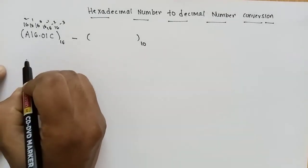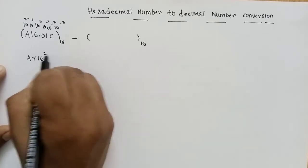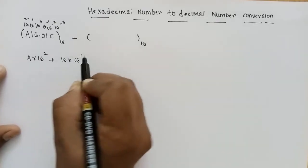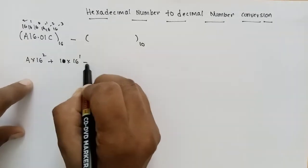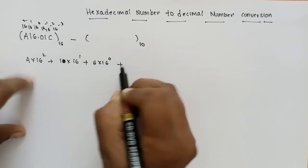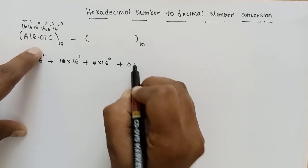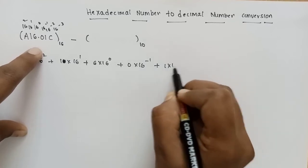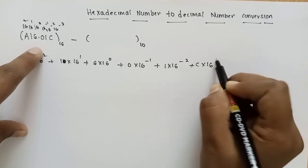We have to multiply these powers. For example: A into 16 squared, plus 1 into 16 power 1, plus 16 into 16 power 0. This is the fractional part of the value: 0 into 16 power minus 1, plus 1 into 16 power minus 2, plus C into 16 power minus 3.